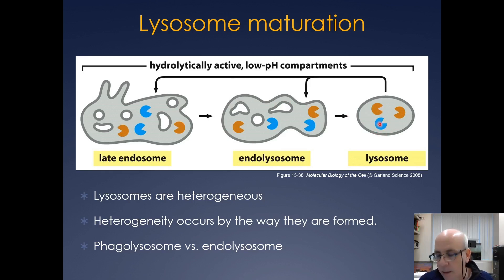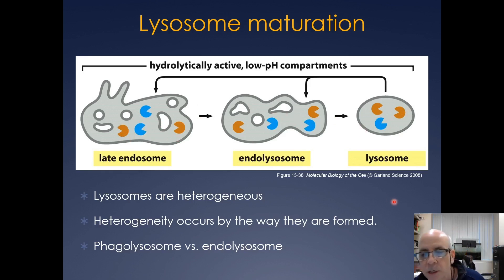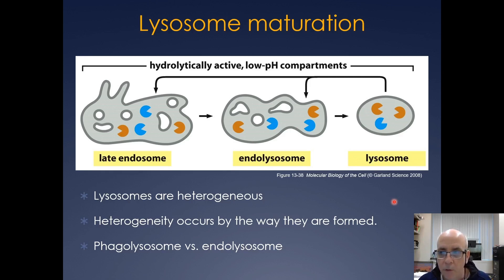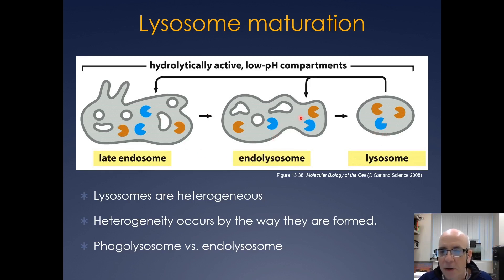If you stain for acid phosphatase in the cell, you end up with a mixture — you're staining the late endosome already fused with a lysosome, the endolysosome, and the lysosome itself. That's what I meant when I said the later stages of the secretory pathway can get messy, because you often have lysosomal compartments in endosomes after they've fused. As pH drops going from late endosome to lysosome, the acid hydrolases cleave up the contents of those compartments.